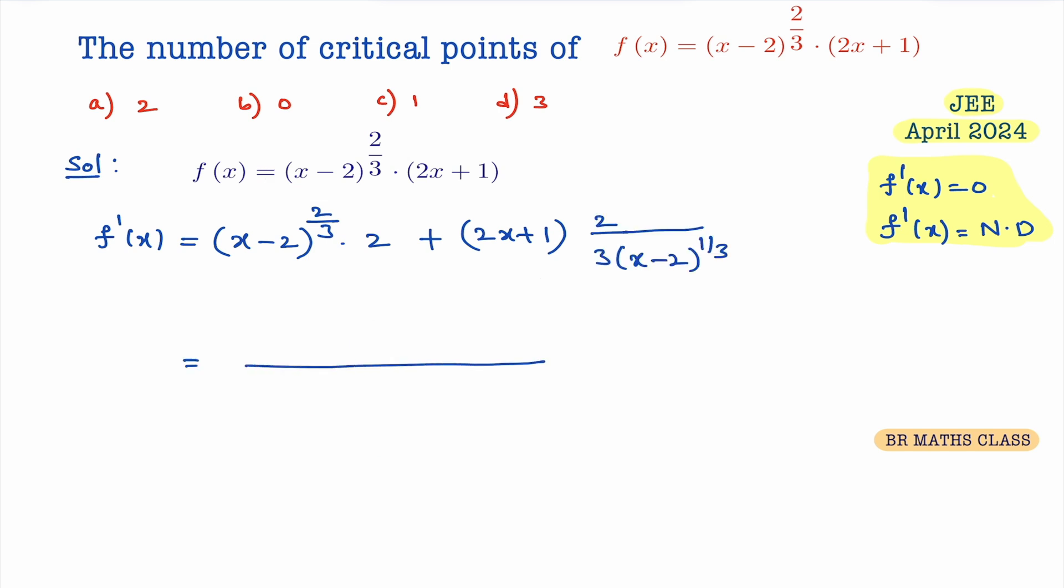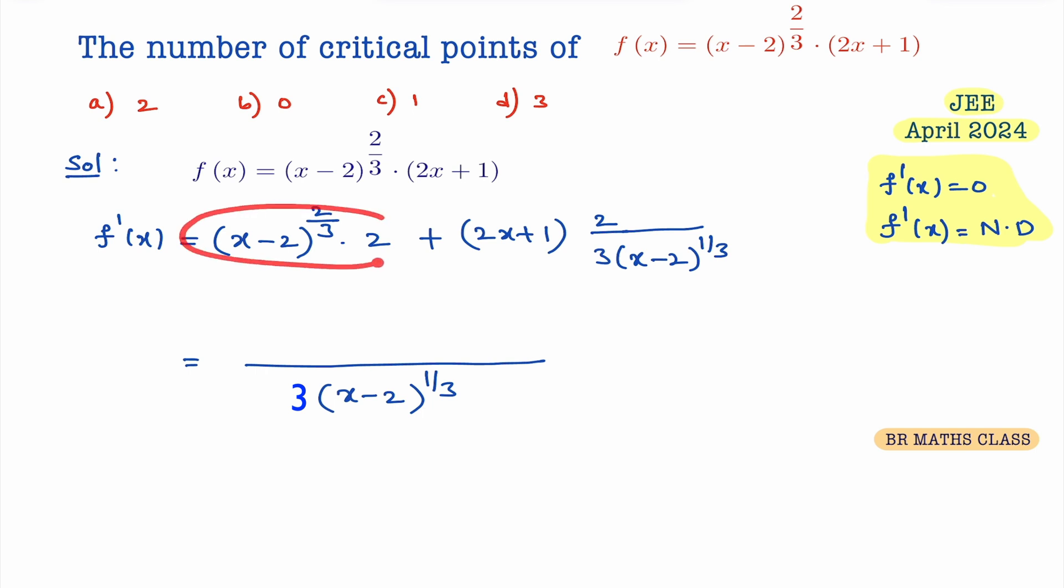Now you simplify this. Denominator, you will get x minus 2 whole power 1 by 3. So when you simplify, we will multiply these two. Multiply 2 into 3 is 6. 6 into x minus 2 whole power 2 by 3 into x minus 2 whole power 1 by 3. This is nothing but x minus 2 whole power 3 by 3, which is x minus 2. So 6 into x minus 2 plus multiply here, what you will get: 4x plus 2.